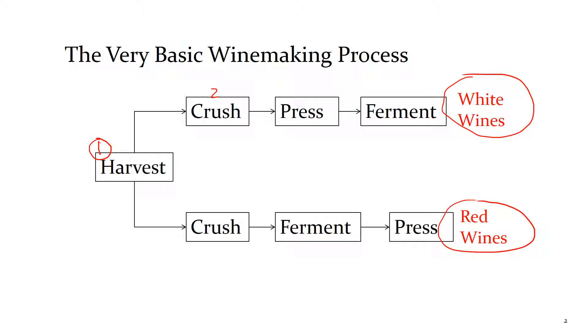In step two we will crush the grapes so we can free up the juice from the grapes so the fermentation process can take place. Whether you're making whites or reds, the first step after harvest is to crush the grapes. Now if you're making white wines, the next step in the process is to press the juice away from the skins. We do not ferment white wines in contact with the skins in general. And then the fourth step is to ferment that juice and turn it into wine.